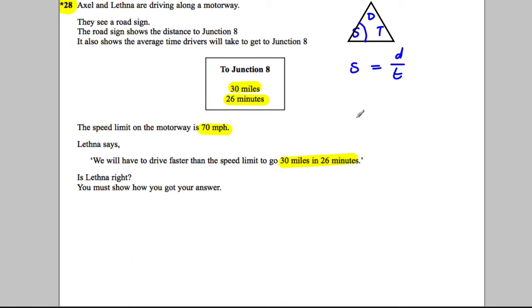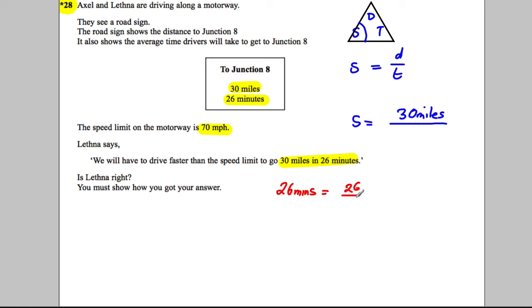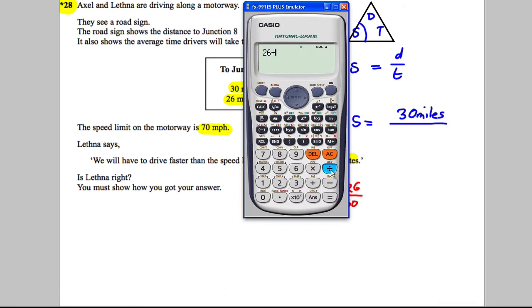So the speed is going to be our distance — 30 miles — divided by our time. It's important that our time is in hours. We have 26 minutes, so we convert: 26 minutes out of 60 minutes in an hour gives us 26 divided by 60, which equals 13 over 30.